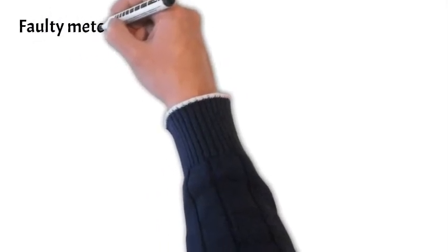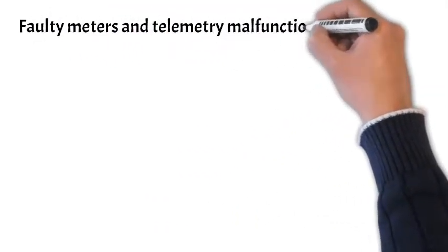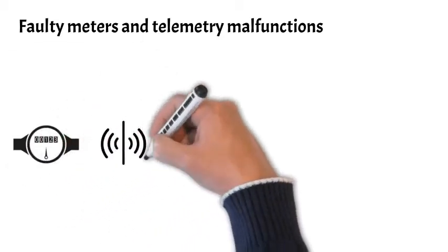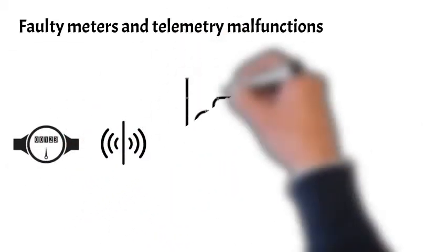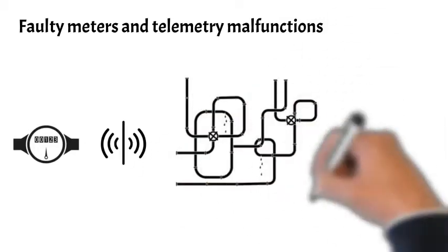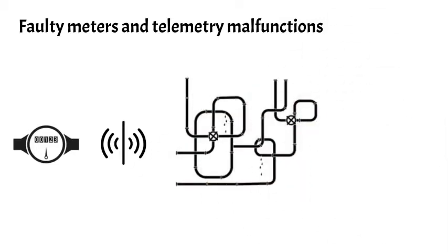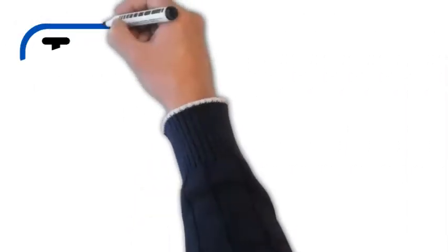The third additional factor is early detection and repair of faulty meters and telemetry malfunctions. When the meters aren't working or don't send their data, it means the utility is not monitoring the DMAs and therefore risks not detecting leaks in these areas.